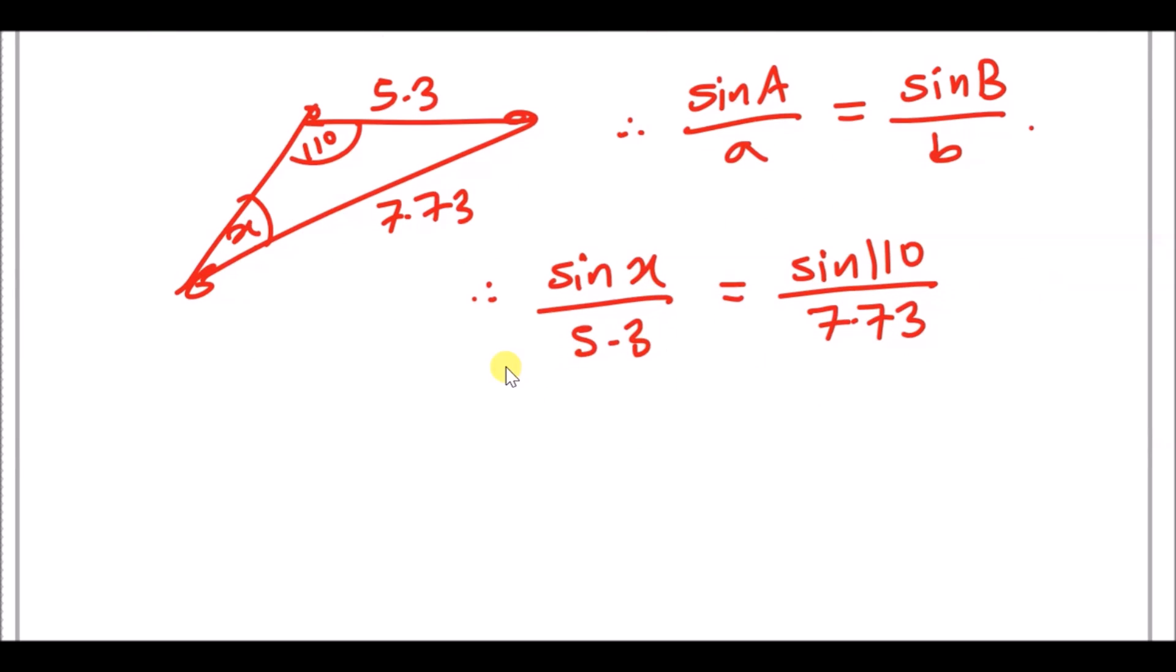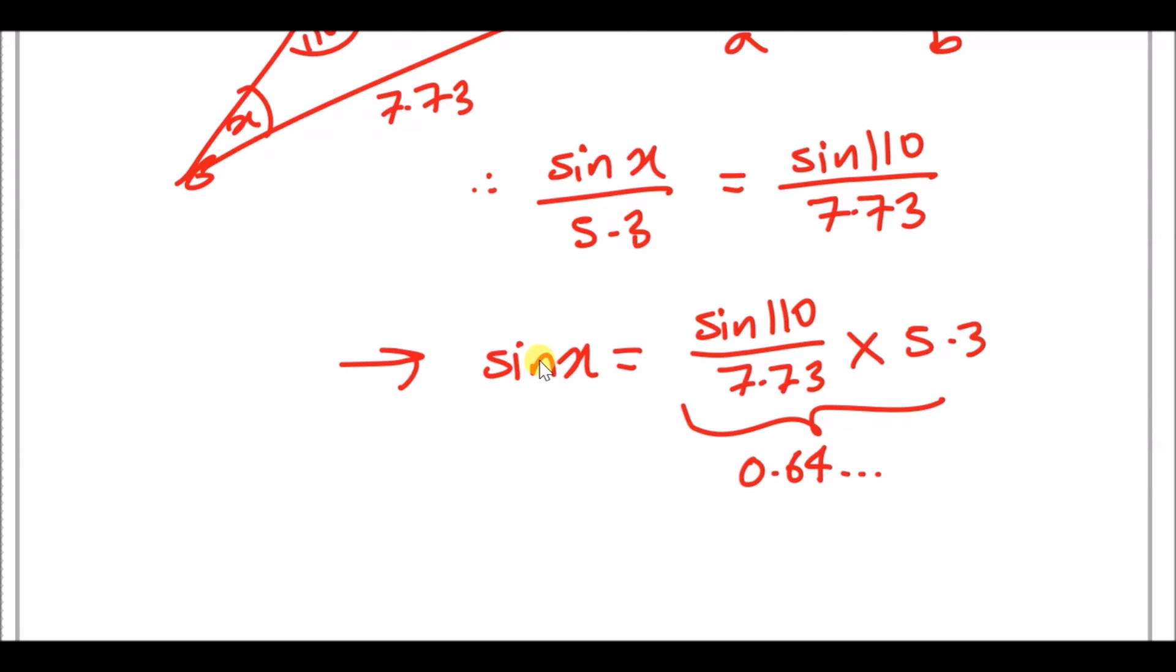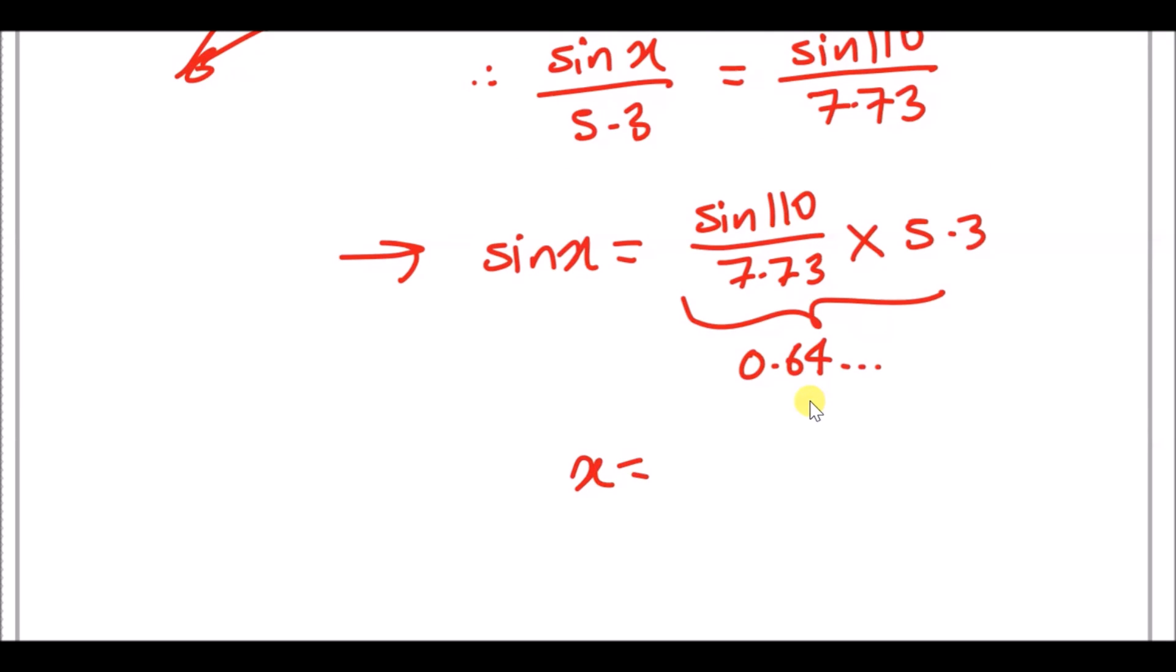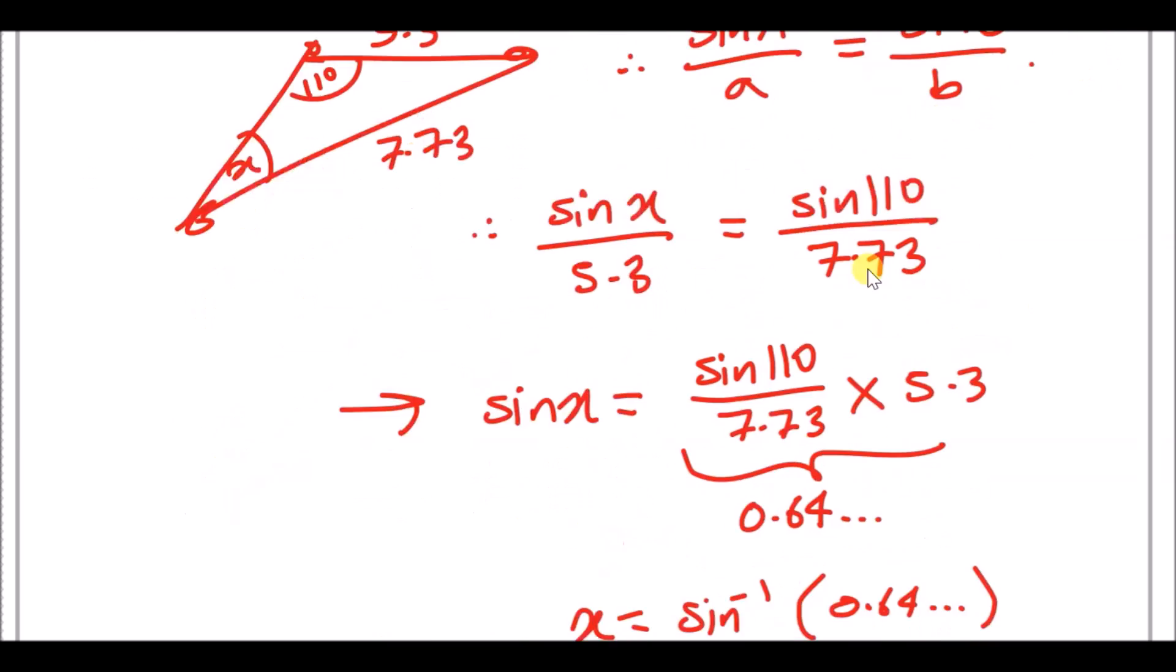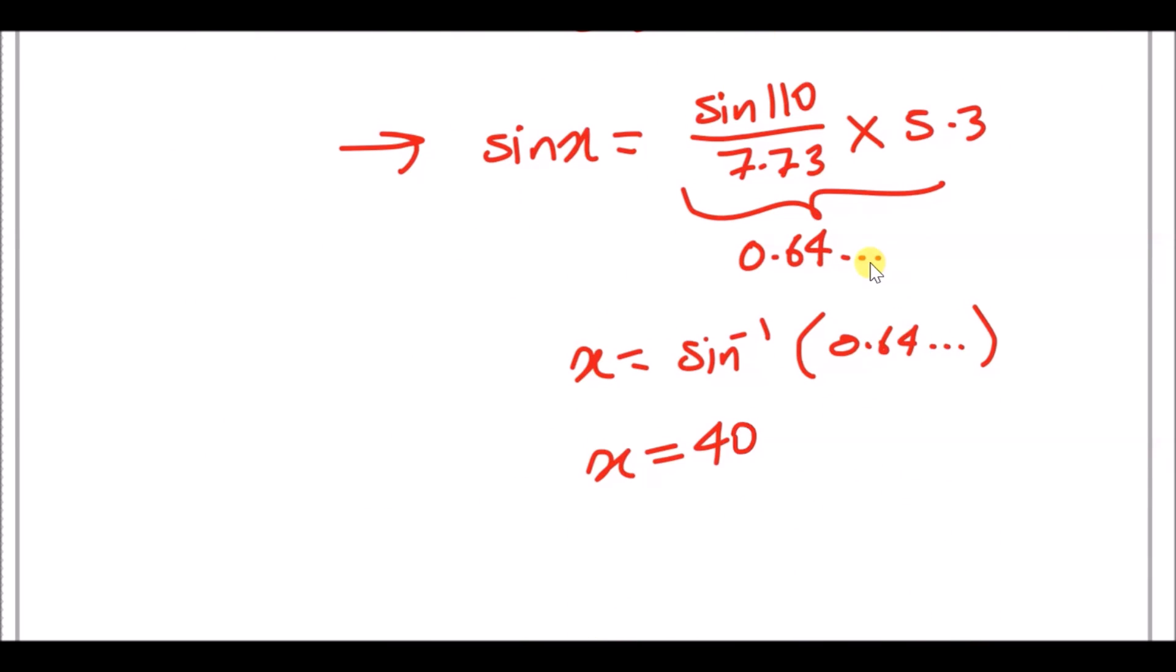Now, all you want to do is solve for x. So we just want to clear this fraction to make sine x the subject. So times 5.3 across, you're going to have sine x equals sine 110 over 7.73 times 5.3. And putting all this in a calculator, you should get 0.64. And now to get the angle x, you need to sine inverse. So shift sine 0.64, and you should finally get 40.1 degrees.